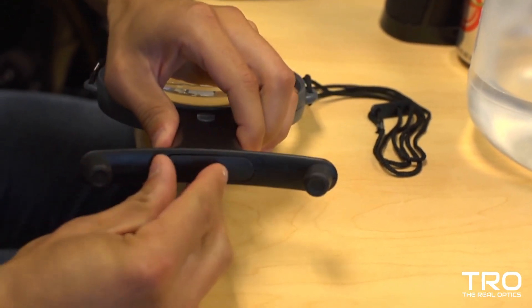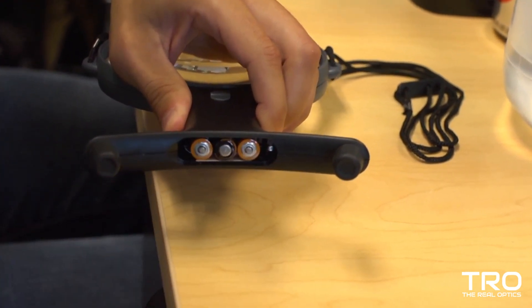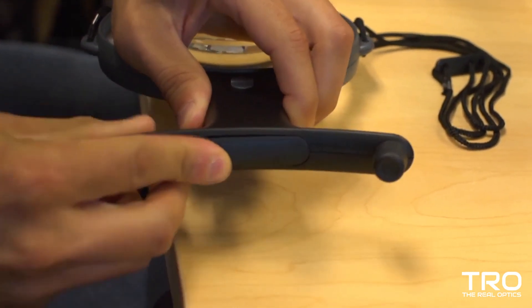If you look at the base of the MagneShine, there's a place where you can install three AAA batteries. This is what will power the LEDs and allow for use in any low lighting condition.